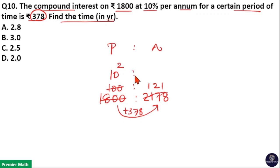Now power is 2, that means number of years is equal to 2. So option D is your answer.